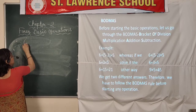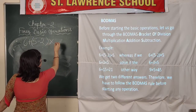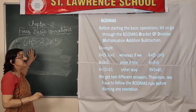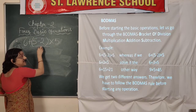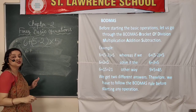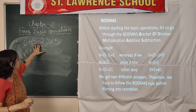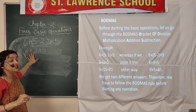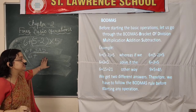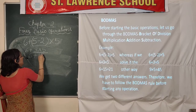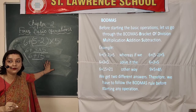Here we have taken a simple example: 6 plus (5 minus 2) into 5. According to the BODMAS rule, first we solve the bracket. So 5 minus 2 is 3, giving us 6 plus 3 into 5. Next, before addition, multiplication comes. So we do 5 into 3 first, which is 15. Now at last we add: 6 plus 15 equals 21.